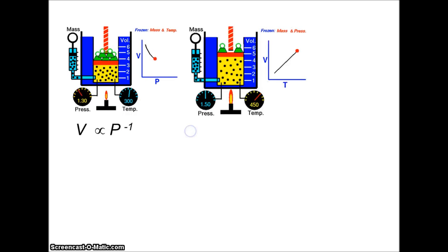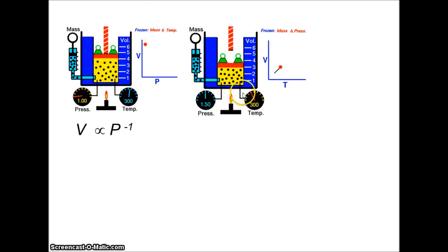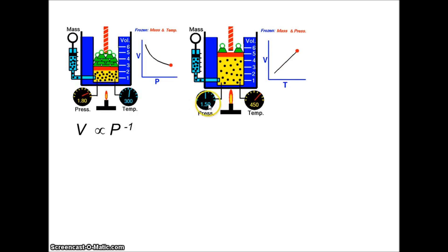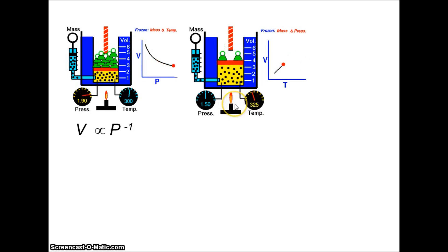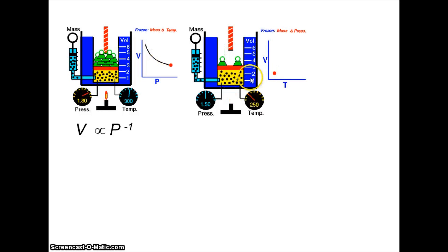Let's repeat the experiment, but this time keep the mass constant again and also keep the pressure constant — notice the weights on top of the gas are constant. In that case, all we're doing is changing the temperature, and as the temperature increases, the volume of the gas expands and increases. So that's a direct relationship.